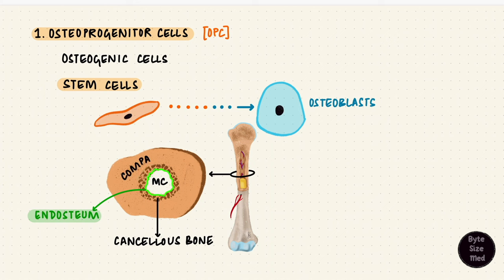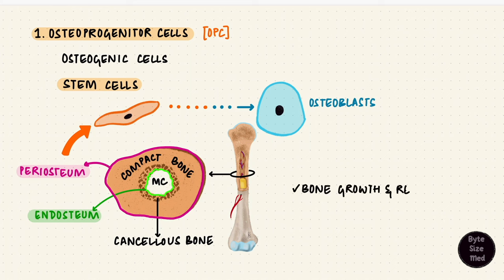Around the cancellous bone is compact bone and the outer layer is periosteum. This endosteum and periosteum, they have cellular layers where these osteogenic cells reside and when needed they can differentiate into osteoblasts. So they are important for bone growth and repair.